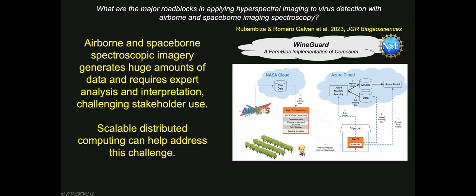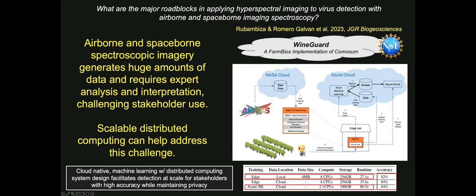Another major roadblock is that airborne and spaceborne spectroscopy generates a huge amount of data and requires expert analysis and interpretation, which significantly challenges stakeholder use. Scalable distributed computing systems can help address this. We developed a system called WineGuard that uses a distributed computing platform enabling stakeholders to take advantage of spectroscopic imagery from space agencies for on-farm disease detection. By having both on-site farm computing and cloud computing, it allows stakeholders to use this data for disease detection while maintaining grower privacy, and we found that the accuracy of these models is quite high.